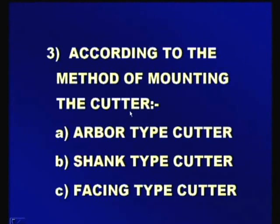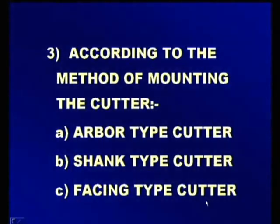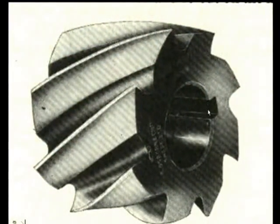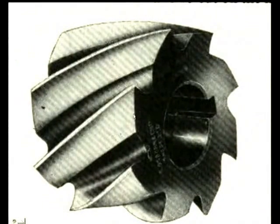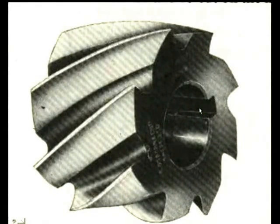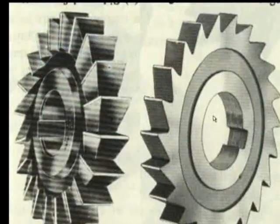The third classification is according to the method of mounting the cutter. The milling cutters are classified as arbor type cutter, shank type cutter, and facing type cutter. Cutters fixed on the arbor are called arbor type cutters. This is a cutter having a central hole and a keyway which can be clamped directly on the arbor — a slab mill, which is an arbor type milling cutter.